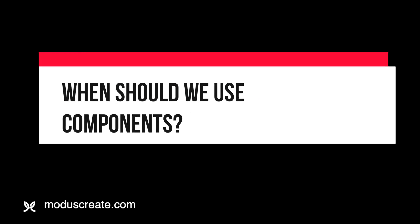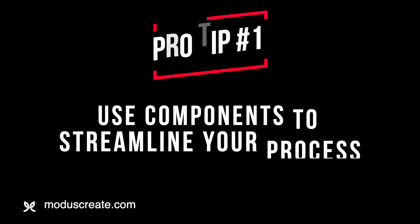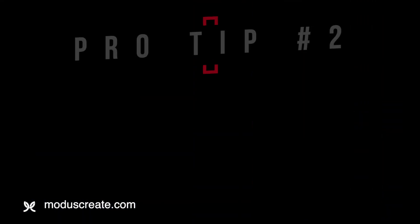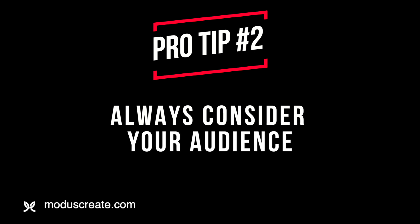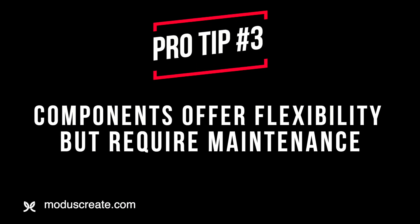Probably the most important question to ask about components is when should we use them? Ideally, you're going to use components to help support and streamline your process. You want to use these components most often to signify when an issue requires different people or different skills, maybe different tools or technologies to complete that particular issue. When building these values, consider that while they may make sense to you, you may not be the person creating the issues, so make sure they make sense to those people who will be creating issues in your project.